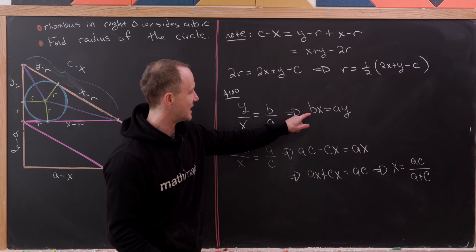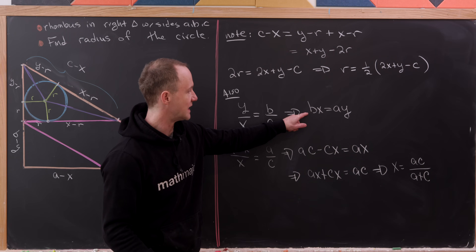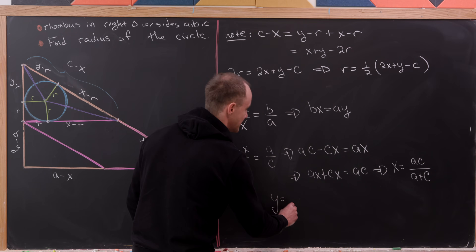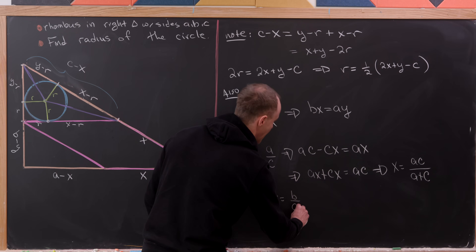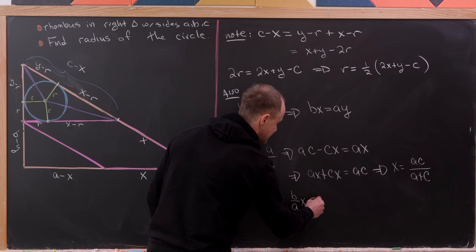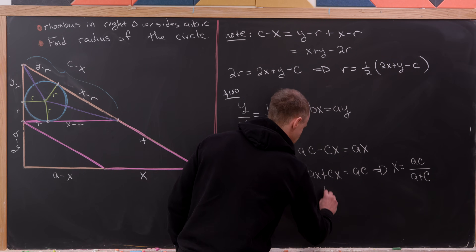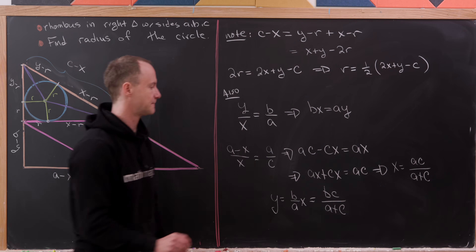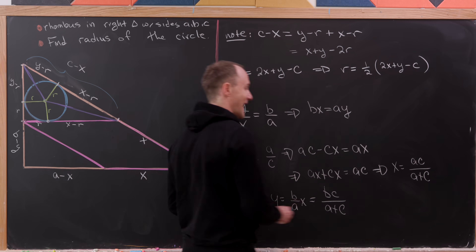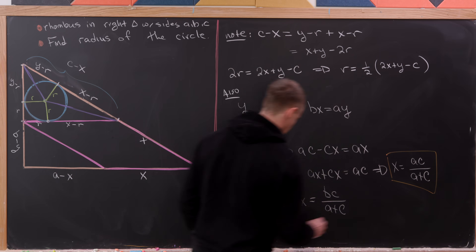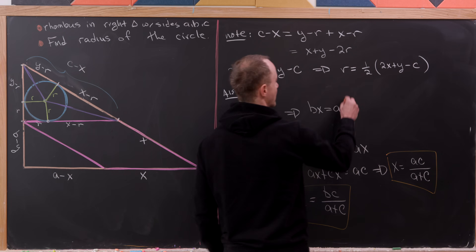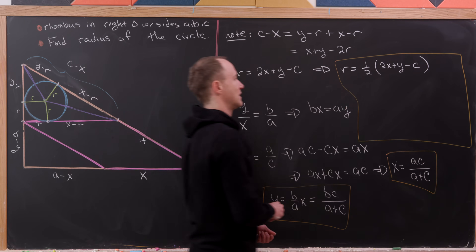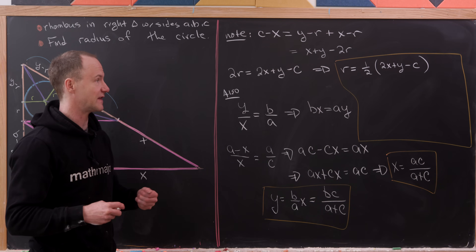Now Y equals (B over A) times X. Substituting X equals AC over (A plus C) gives Y equals BC over (A plus C). We now have explicit formulas for both X and Y in terms of A, B, and C, ready to plug into our radius formula.